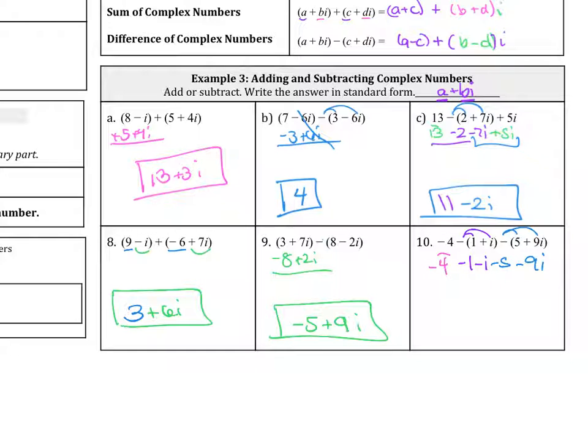Let's combine like terms. Let's look at our constants first. So we have negative 4, negative 1, and negative 5. So that is negative 10. Then we have the negative i minus 9i. Well, that's a negative 10i.